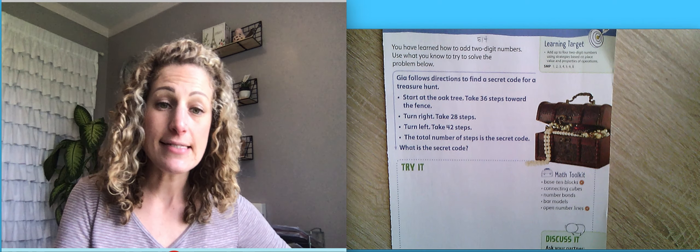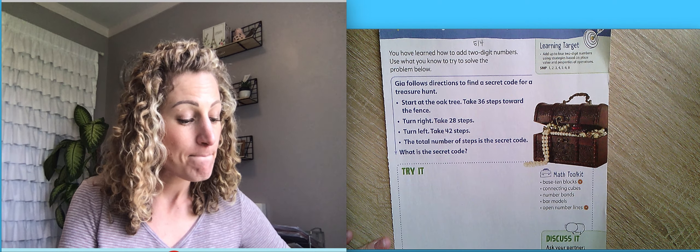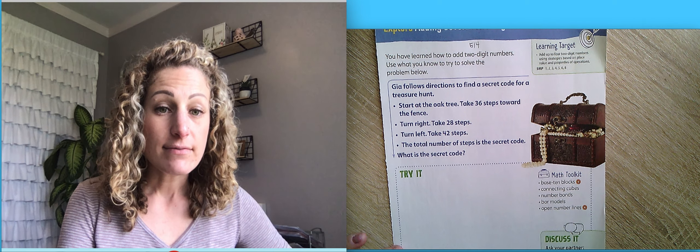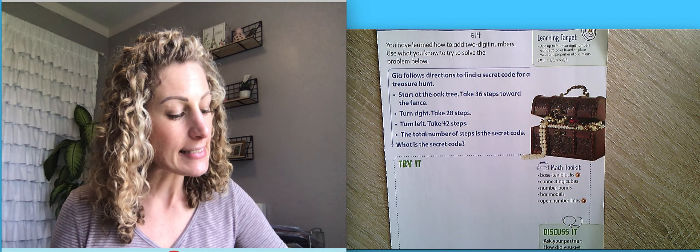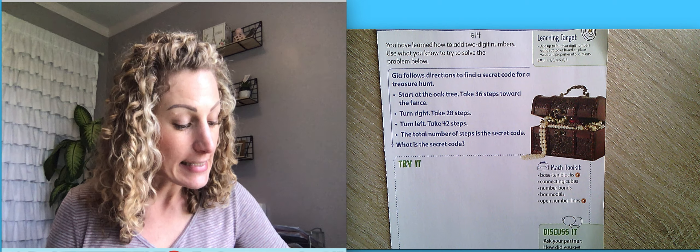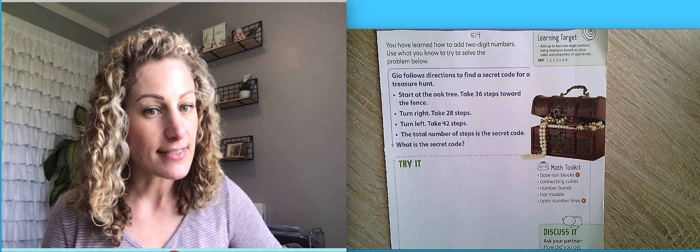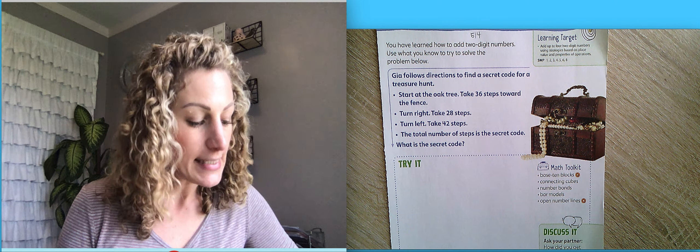And here is our lesson. It says, Gia follows directions to find a secret code for a treasure hunt. Start at the oak tree. Take 36 steps toward the fence. Then turn right. Take 28 steps. Turn left. Take 42 steps.